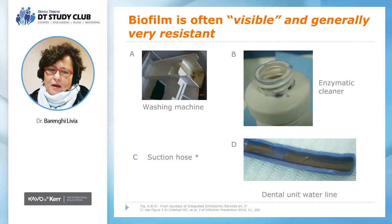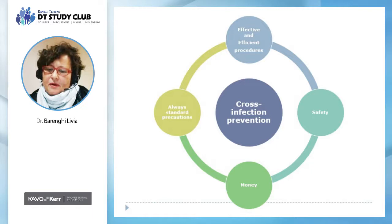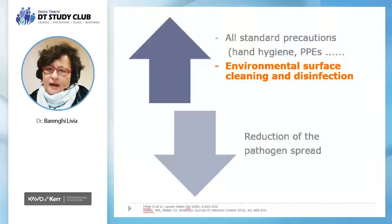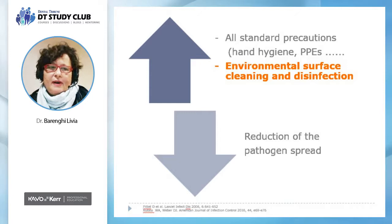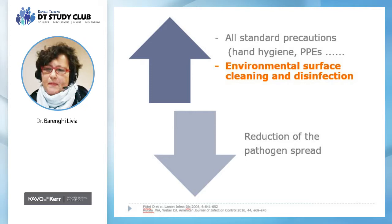When we choose the line of attack to prevent cross-infection, all decisions must consider efficacy, efficiency, and the safety of a procedure. In addition, time and money needed are a big issue for all dental teams today. We need to improve all standard precautions — for example, hygiene, use of PPE, reconditioning of instruments, and so on. The extent of patient-to-patient transmission has been found to be partially proportional to the level of environmental contamination. Therefore, environmental surface cleaning and disinfection are important to reduce the spread of pathogens in health facilities.